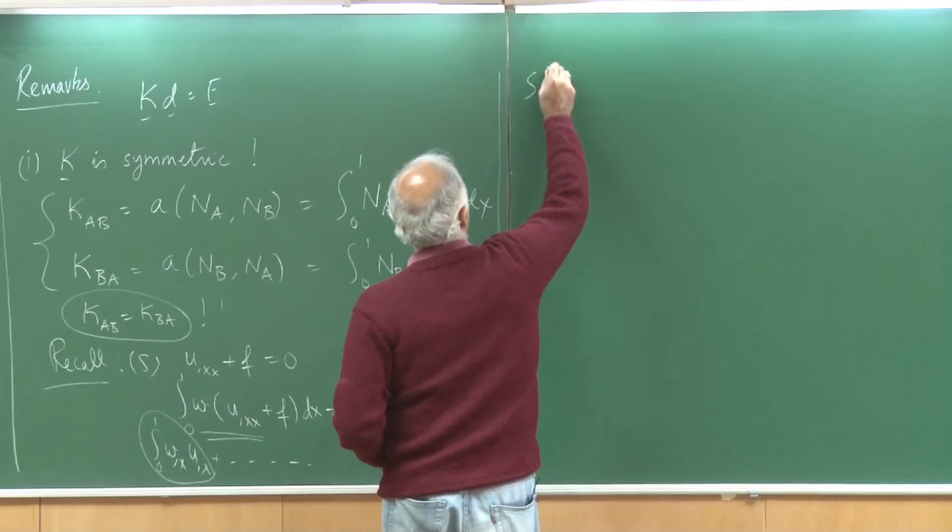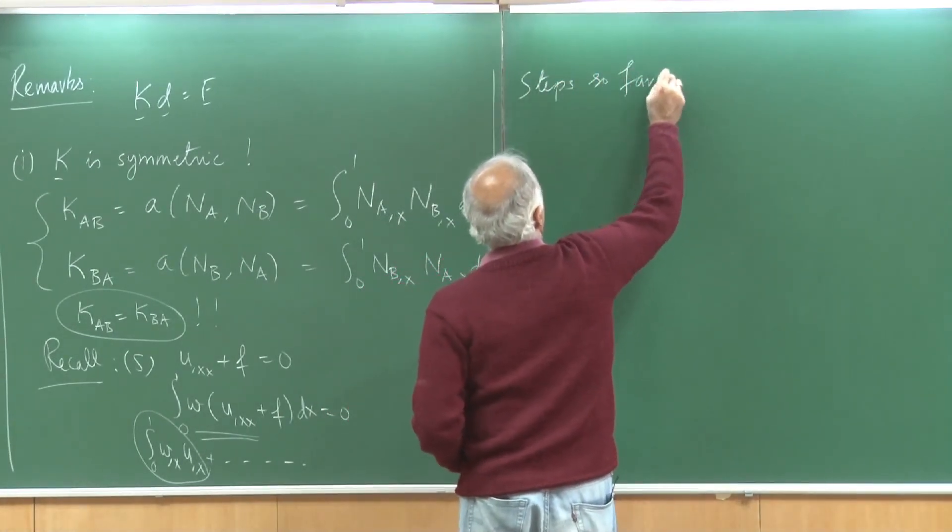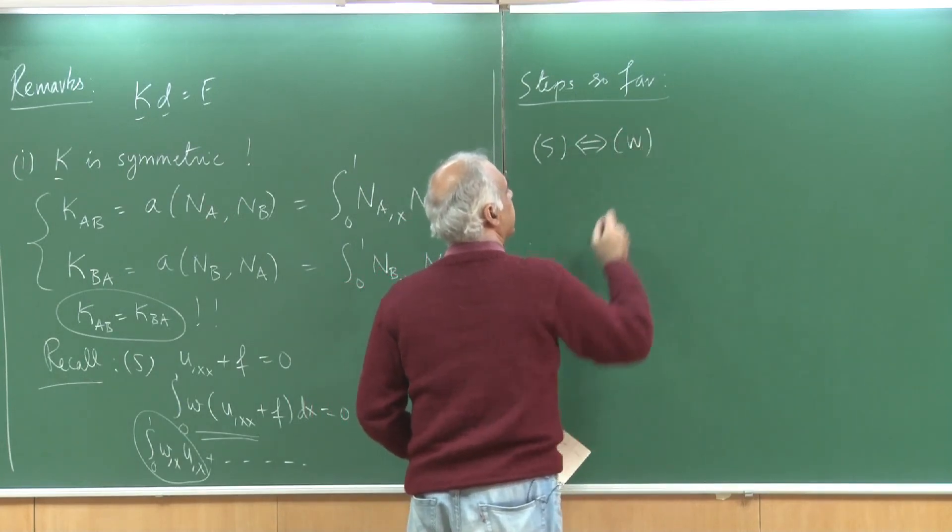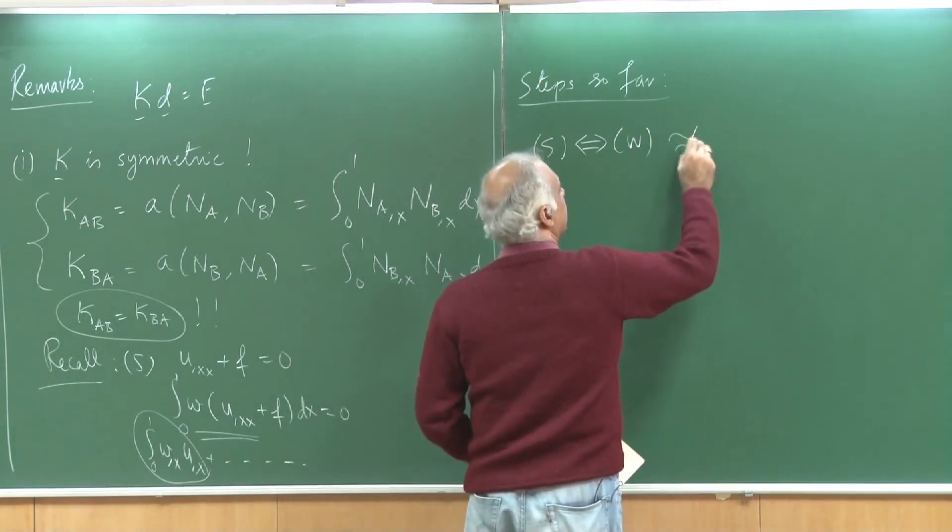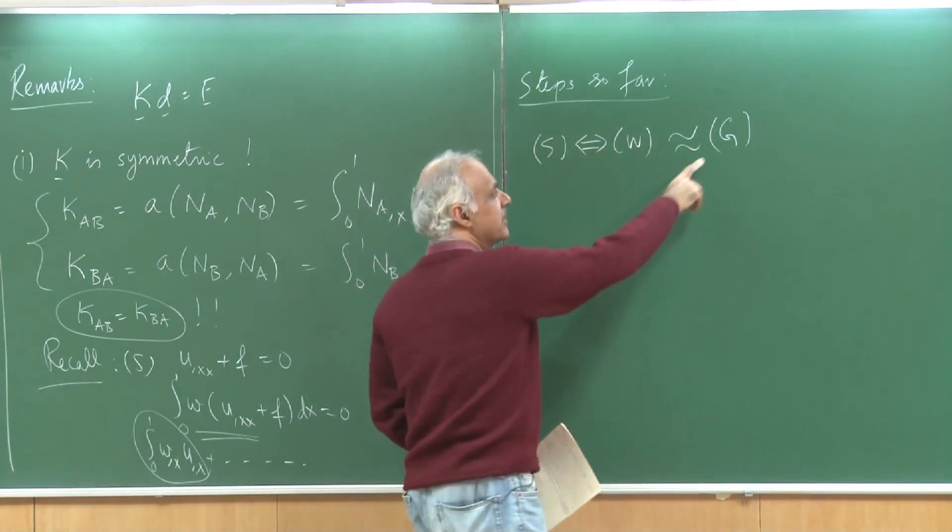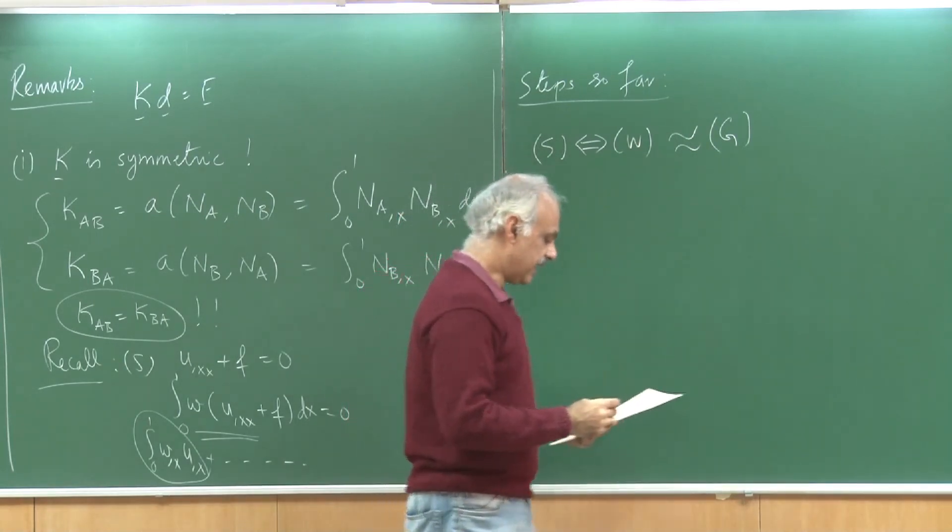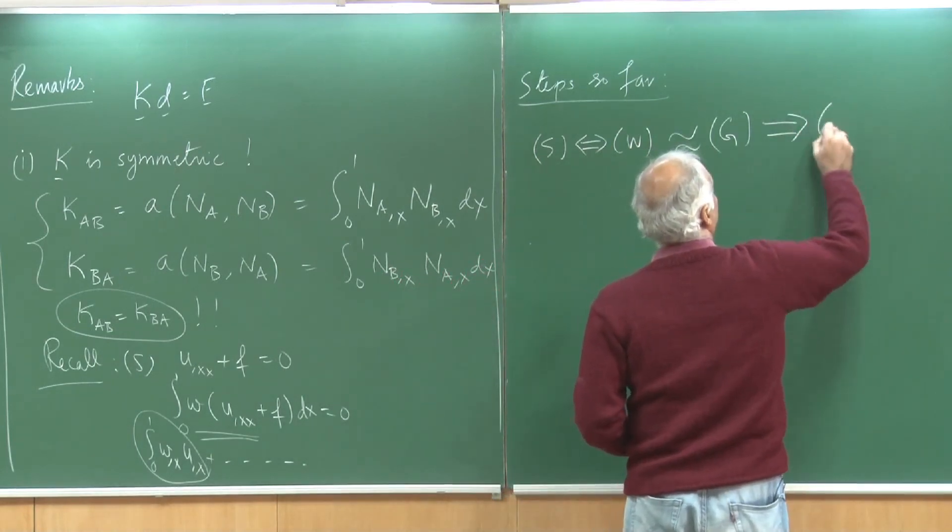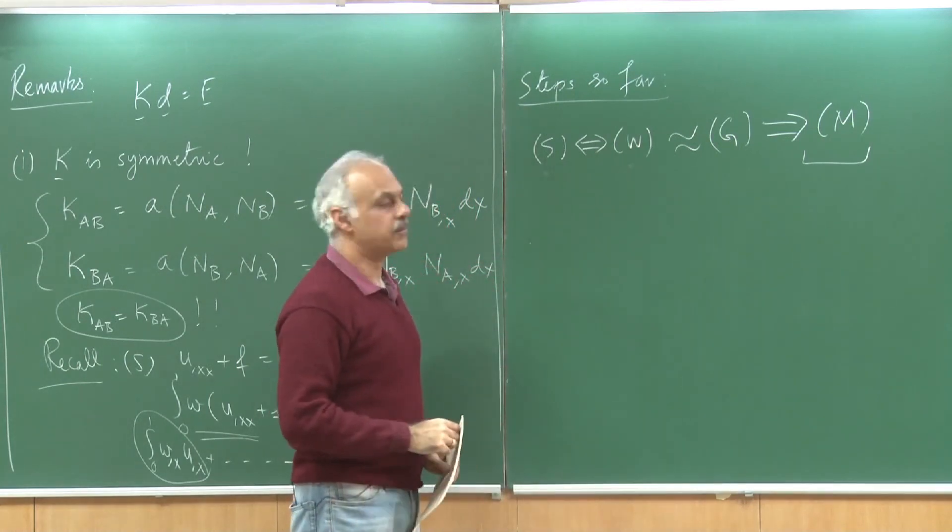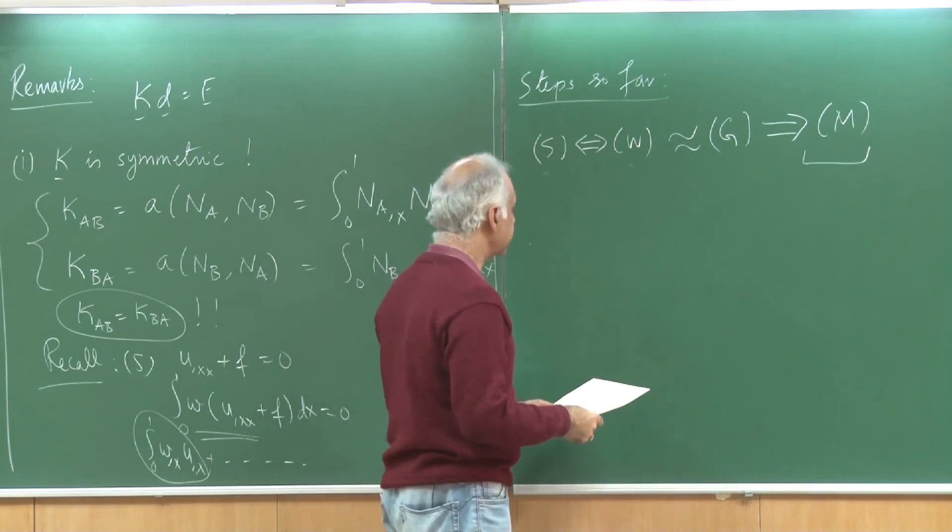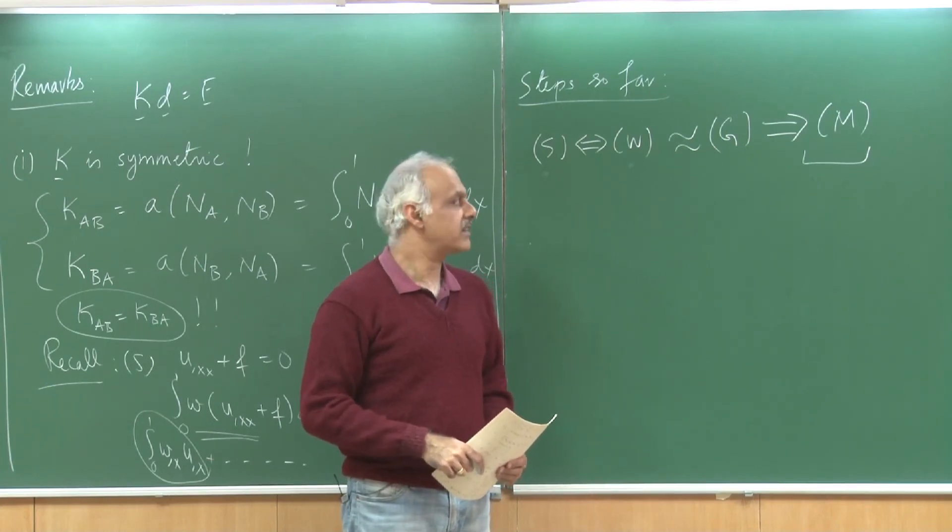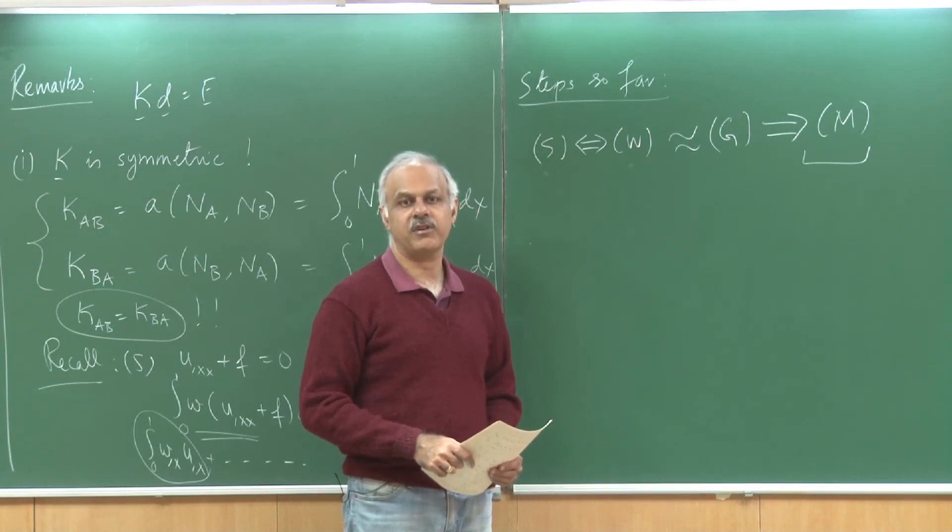Let me review the steps so far, always a good idea to keep in mind. There was a strong form and we said that this is equivalent to the weak form. Then, we approximated this to the Galerkin form by taking finite dimensional spaces and then, once we have the Galerkin form, we chose some basis functions and then we were able to derive a matrix form. This is where we are and you can see it is an approximation to the strong form and it is an approximation to the weak form. We will stop here and in the next class, we are going to look at some examples of this method by choosing different values of n and seeing how the method performs. Thank you.